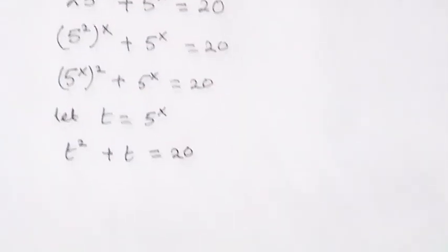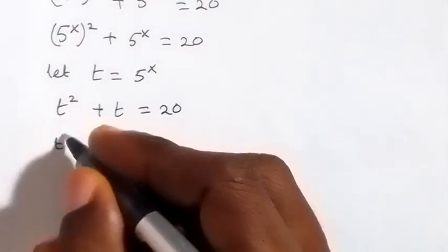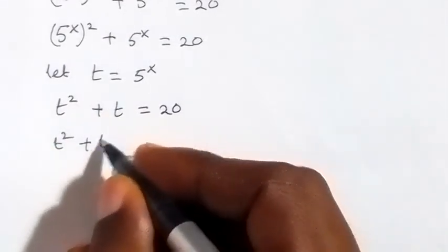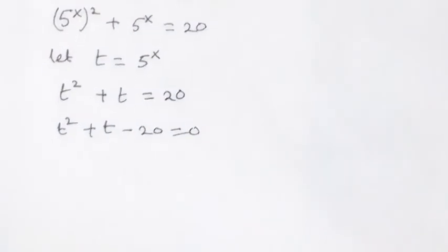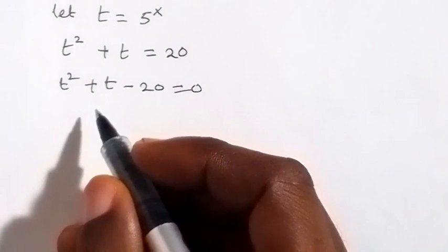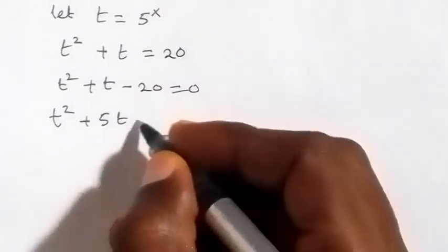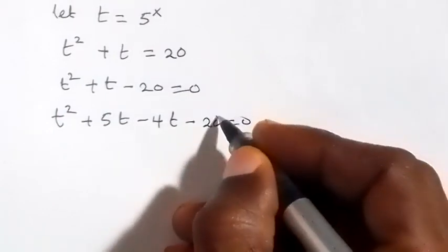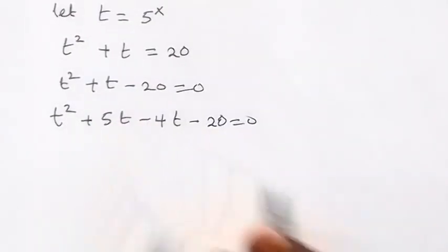So the next step is to use this to form a quadratic equation by taking 20 to the other side. This becomes t squared plus t minus 20 equals 0. We can factorize this, which gives us t squared plus 5t minus 4t minus 20 equals 0, because plus 5t minus 4t gives us t, and when we multiply them we get minus 20.